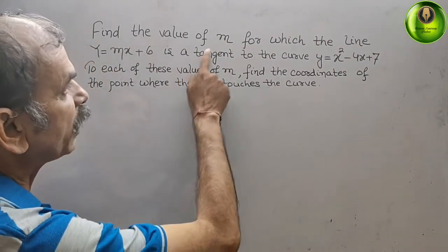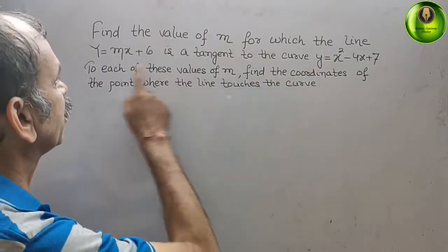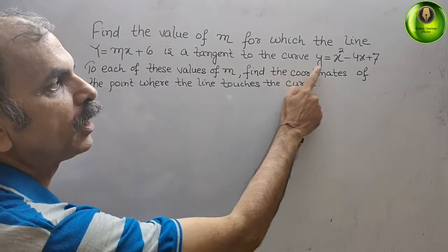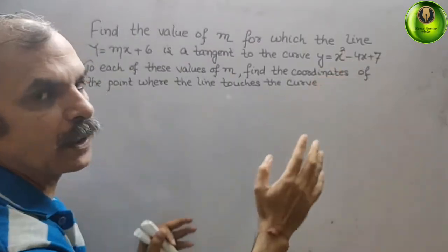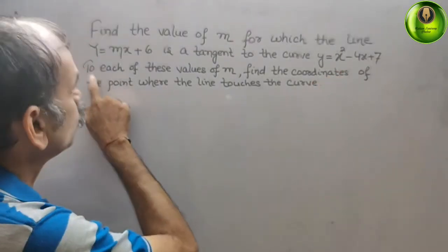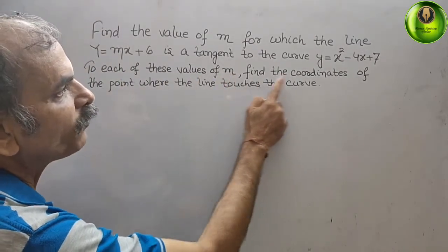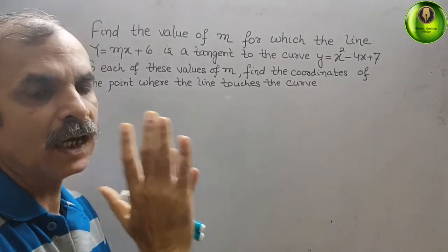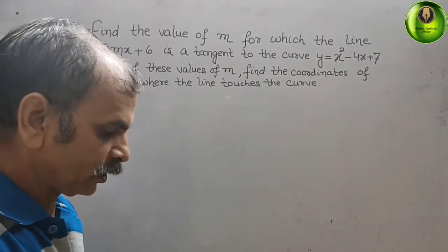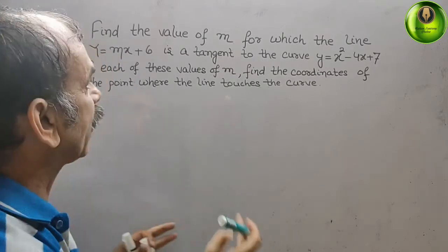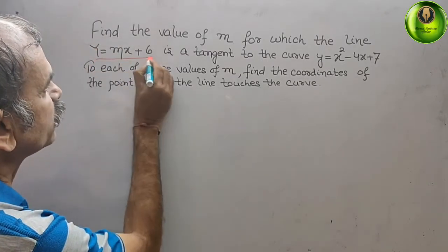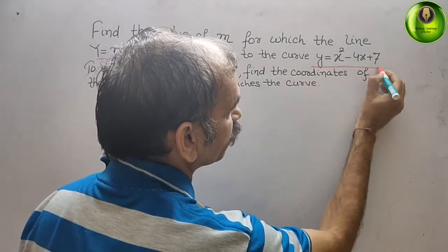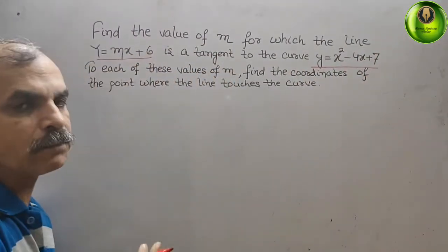The question is: find the value of m for which the line y = mx + 6 is a tangent to the curve y = x² - 4x + 7. To each value of m, find the coordinates of the point where the line touches the curve.